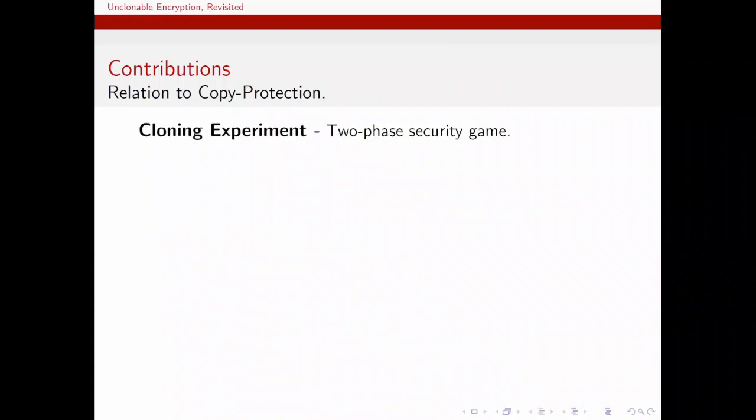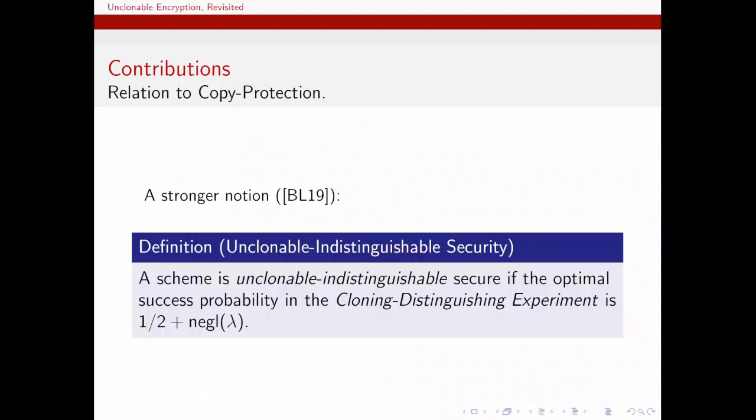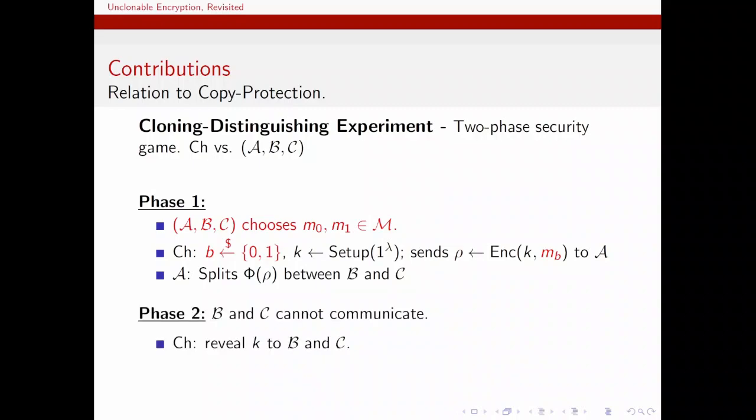So recall the unclonable security game. And now we will present a stronger version, which was introduced by Broadbent and Lorde also. In this version, the adversary gets to choose a pair of messages and plays a semantic security game where to win, Bob and Charlie must simultaneously distinguish these messages after the key has been revealed in the second phase. Note that in this experiment, the trivial strategy succeeds by having Charlie guess randomly and the probability of success is one half. Therefore, we call an unclonable encryption scheme unclonable indistinguishable secure if the optimal value of this experiment is negligibly close to one half.